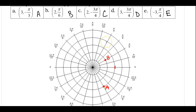For C, again I'm going to go out to the second circle, but this time I'm going to rotate negative 3 pi over 4. So if I was going to rotate negative 4 pi over 4, that would be the full 180 degrees. But I don't want to do that — I want to go one less. So that's going to put me at the pi over 4 right before that. So that's going to be C.